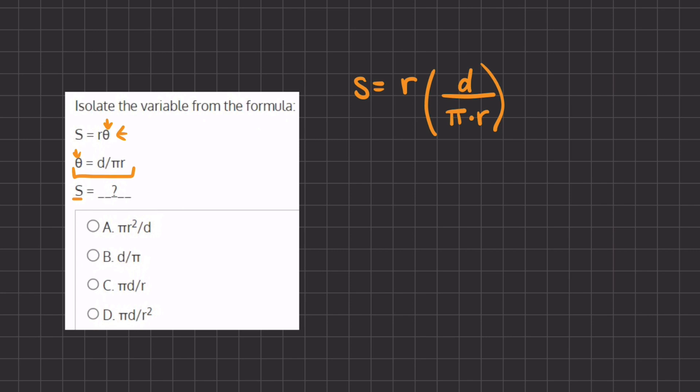Remember when we have two variables written next to one another, they are being multiplied. And so now let's further simplify. We can distribute this r and now we have d times r divided by pi times r.